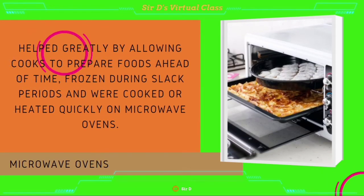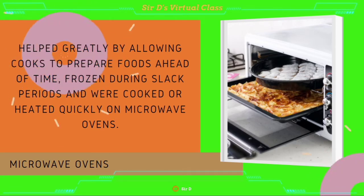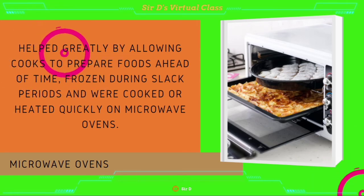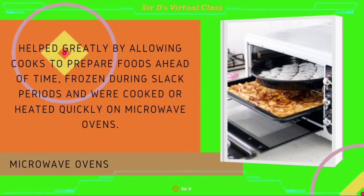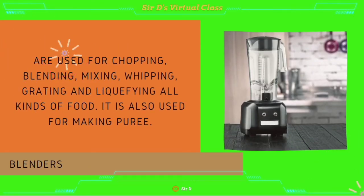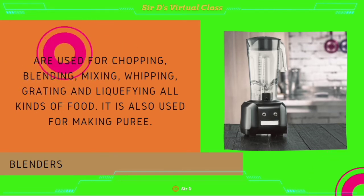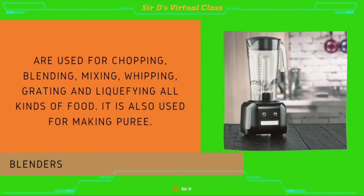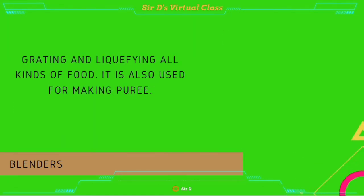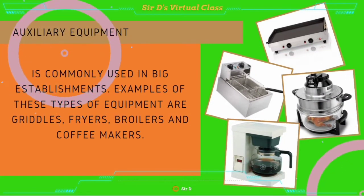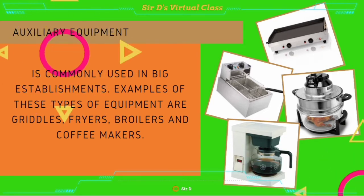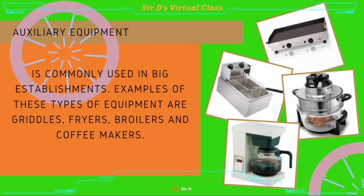Microwave oven helps greatly by allowing cooks to prepare foods ahead of time, frozen during slack periods, and then cooked or heated quickly on microwave ovens. Blenders are used for chopping, blending, mixing, whipping, grating, and liquefying all kinds of foods. They are also used for making puree. We also have auxiliary equipment like fryers, griddles, broilers, and a coffee maker, commonly used in big establishments.